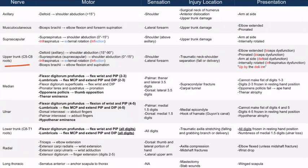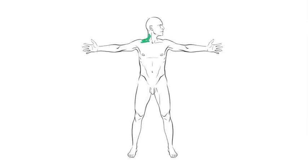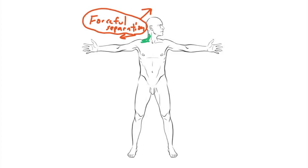The upper trunk can be damaged by neck and shoulder separation, occurring during a fall or delivery. The brachial plexus runs through this region. During childbirth, if the head is forcefully pulled while the shoulder remains in the birth canal, the upper trunk can be stretched. Another scenario is a fall onto the lateral neck — for example, falling from a tree and landing directly on the neck, causing forceful separation of the head in one direction and the shoulder in the other.